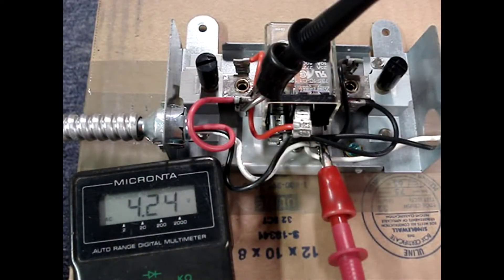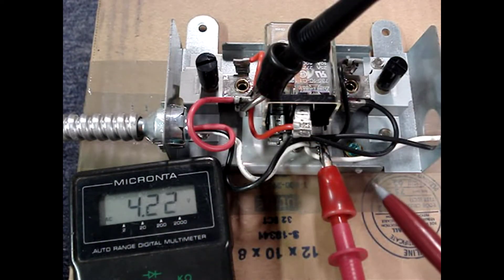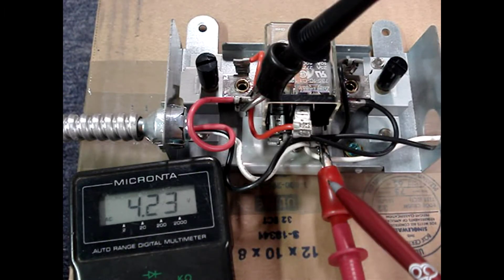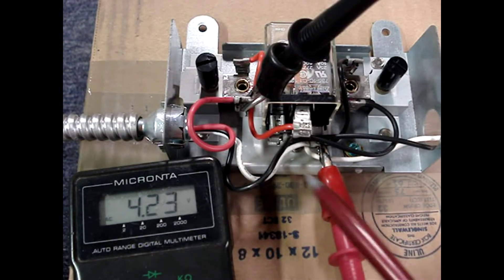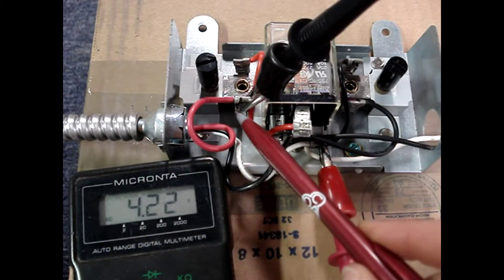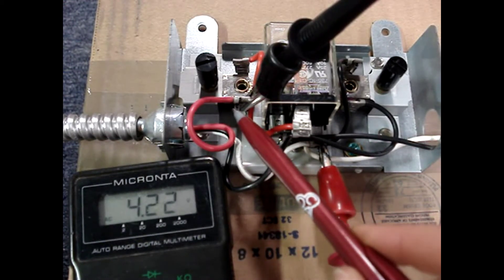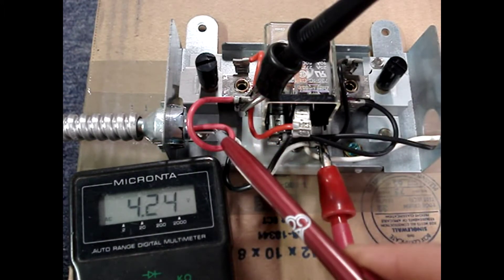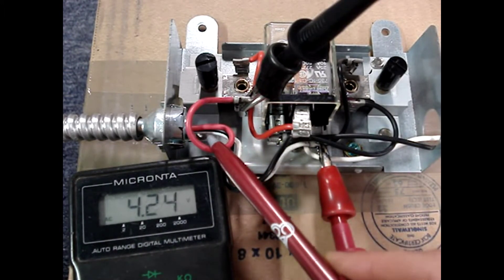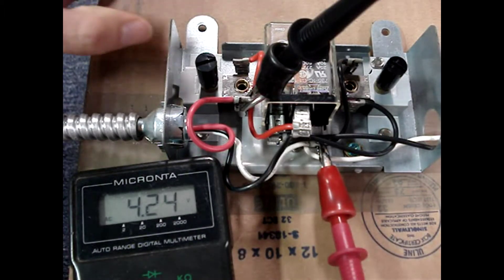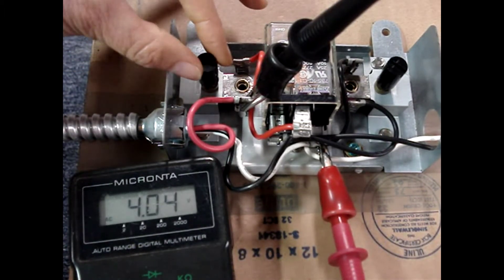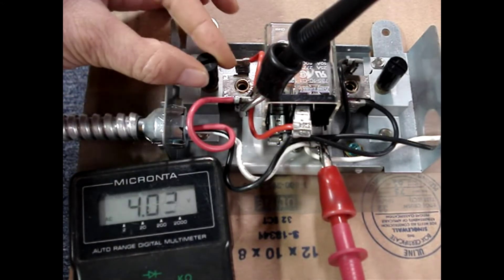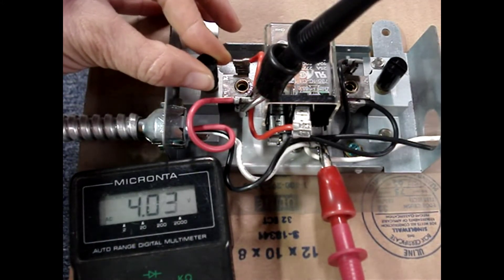I now have the controller energized. I have a multimeter set up to read AC volts. I'm clipped on to the neutral wire and I'm clipped on to the output of the low temperature switch that connects to our low speed fan connection. And I'm going to turn the temperature down to simulate a 90 degree temperature.